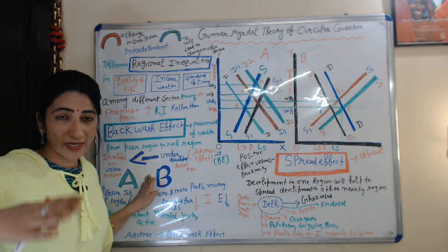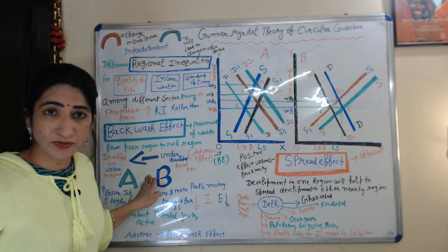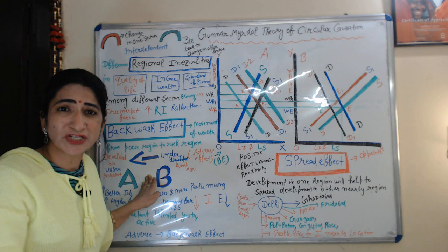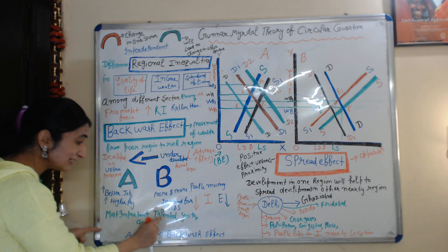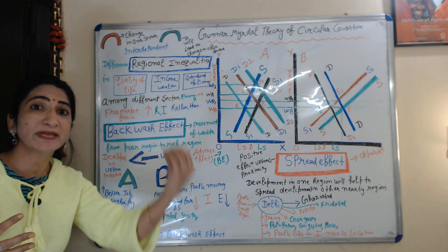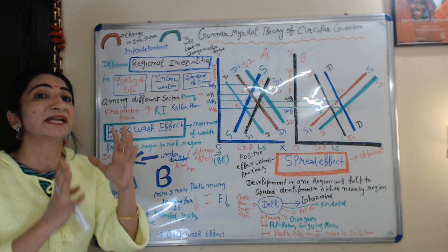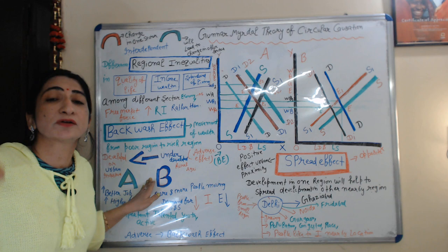As a result, the population of the underdeveloped region is reducing. If population is reducing, demand for goods and services also reduces. If demand reduces, then investment, capital formation, and employment also reduce. Most importantly, talented youth and active people from the underdeveloped region are moving to the developed region — so how can this underdeveloped region grow? This creates an adverse effect on the growth of the underdeveloped region.